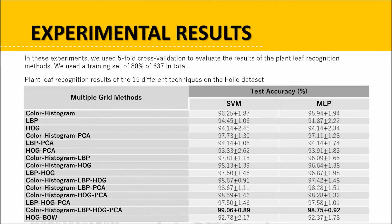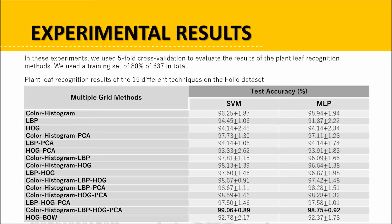Experimental results: in this experiment, we used 5-fold cross-validation to evaluate the results of the plant leaf recognition methods. We used a training set of 80%. The results in the table show 15 different results. The HOG method obtained worse performance compared to the other feature extraction techniques. On the other hand, the color histogram LBP-HOG-PCA when combined with the SVM with the RBF kernel algorithm significantly outperforms the other techniques and provides a high accuracy of 99.06%.